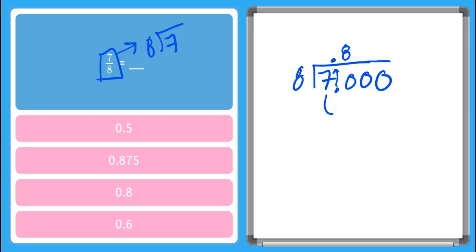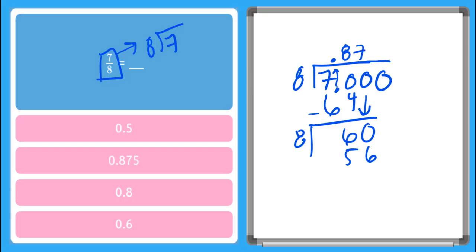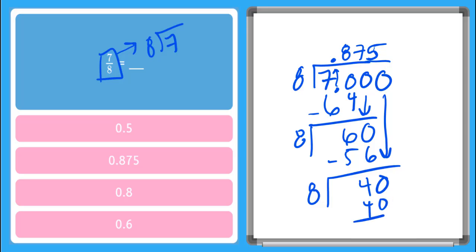So if we say 8 here — 8 times 8 we said was 64 — and so now when I subtract here I'm going to get a 6. And if I bring another 0 down, now I'm saying how many times does 8 go into 60? Well, 8 times 7 gives me 56. And if I subtract these here, I'm going to get 4. Let's bring down another 0 — we're already at two decimal points here. So now 8 goes into 40 how many times? 5 times. And 8 times 5 is 40, so when I subtract those I get a 0. I've completed my division problem and I see that my answer is 0.875, which is the equivalent decimal of 7 eighths.